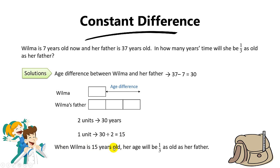So when Wilma is 15 years old, her age will be one third as old as her father.